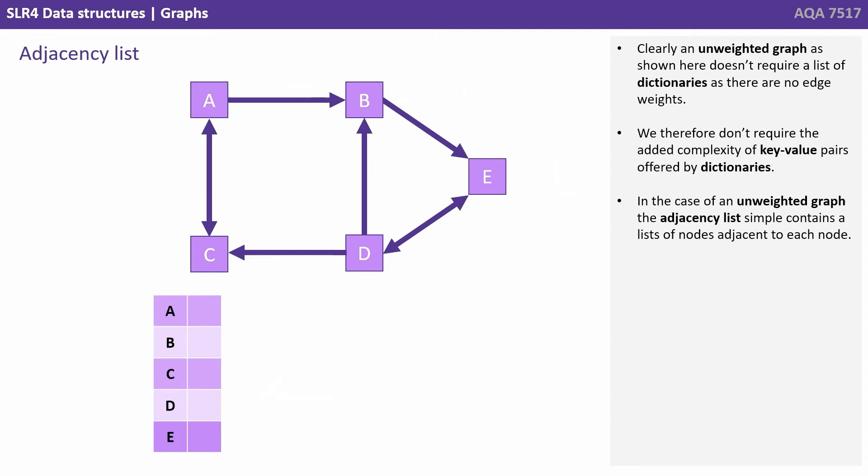Clearly, an unweighted graph as shown here doesn't require a list of dictionaries, as there are no edge weights. We therefore don't require the added complexity of the key value pairs offered by dictionaries. In the case of an unweighted graph, the adjacency list simply contains a list of nodes adjacent to each node.